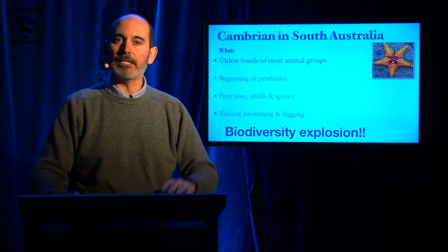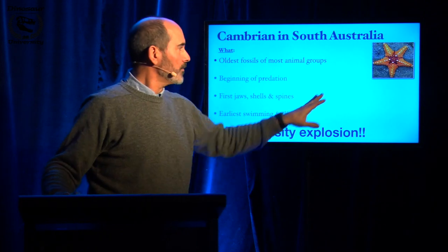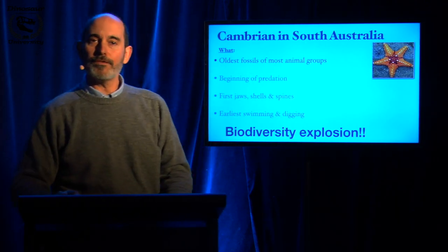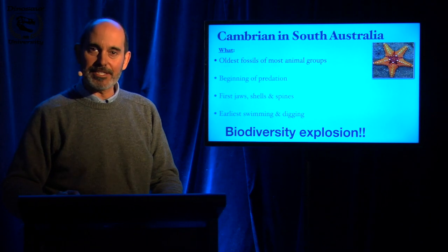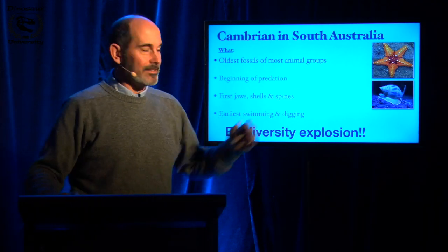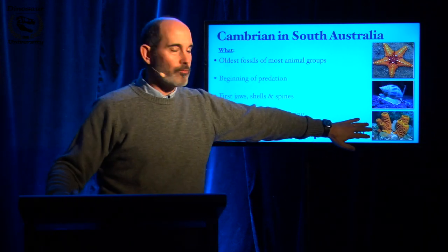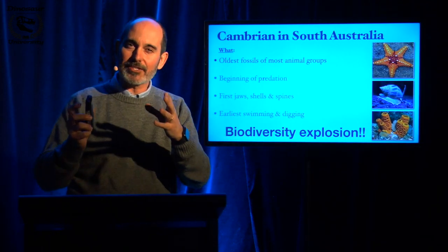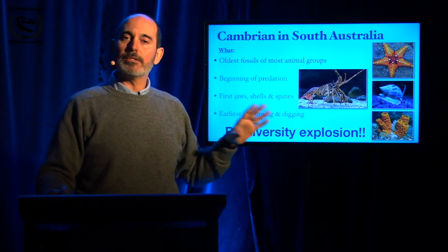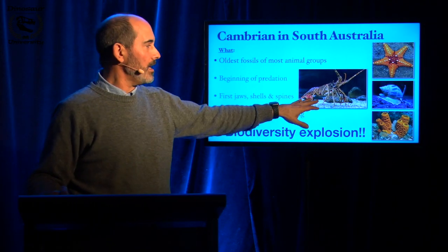There are some hints at what's happening in the Ediacaran, but by this time we've got unequivocal early echinoderms — the ancestors of sea urchins and sea stars. We also have the ancestors of mollusks, like the snails and squids. We've got a really good record of sponges, some of the early less complex organisms. And one of the most impressive and important groups in the fossil record: the arthropods.